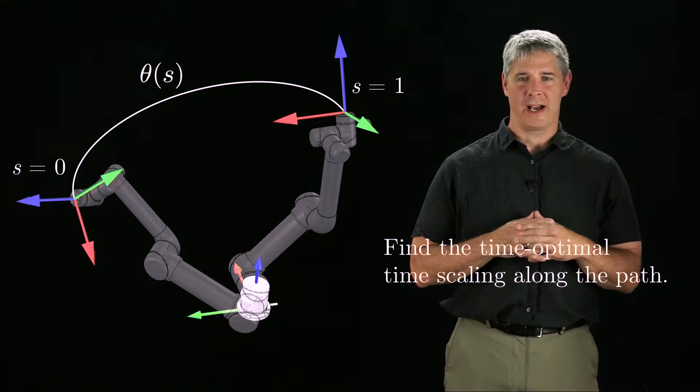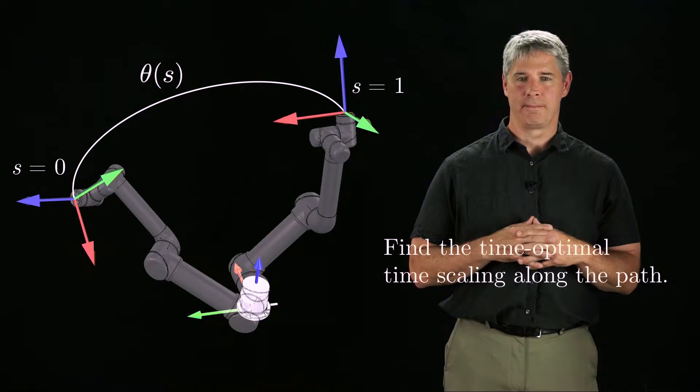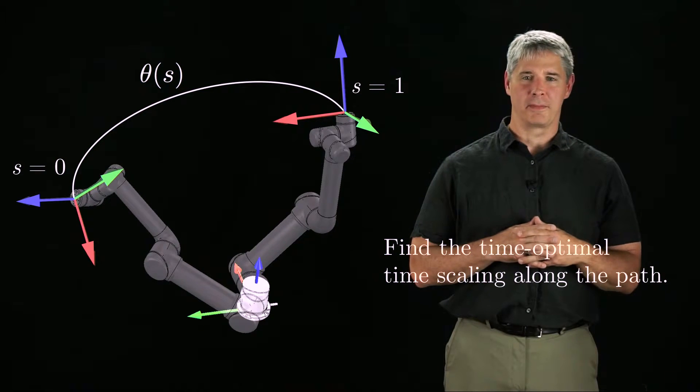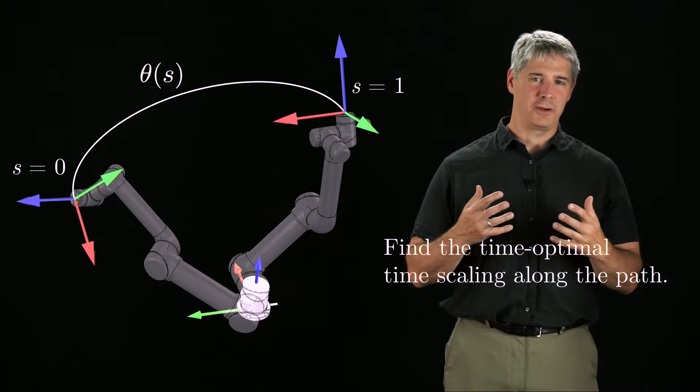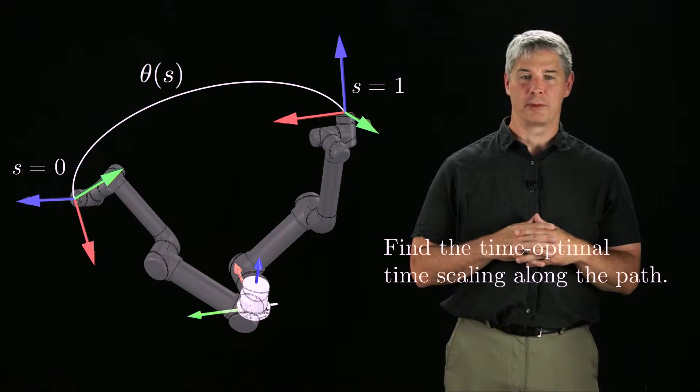Minimum time motions can be used to maximize the productivity of a robot. You could imagine trying to optimize other criteria, like the amount of energy consumed by the actuators, but in these next few videos we'll focus on time-optimal trajectories.